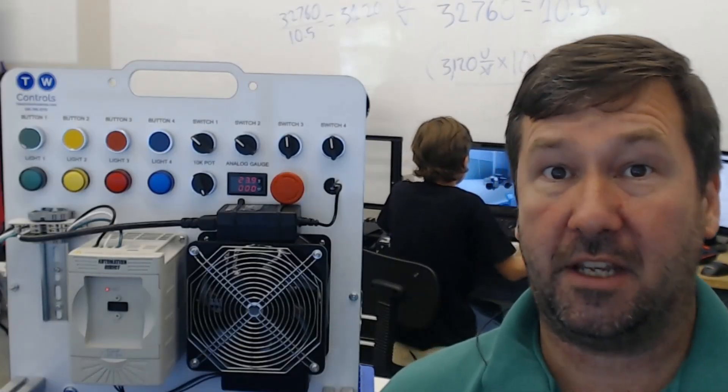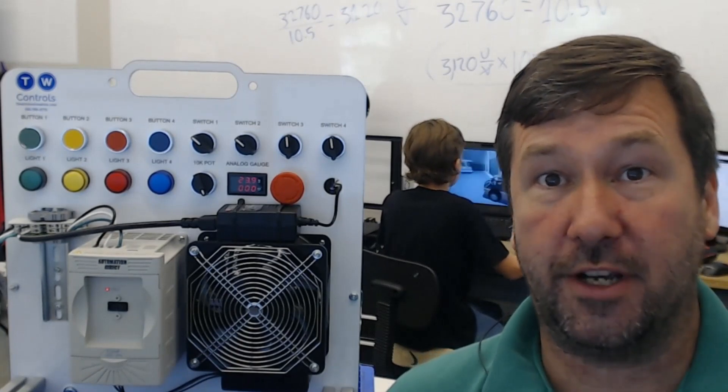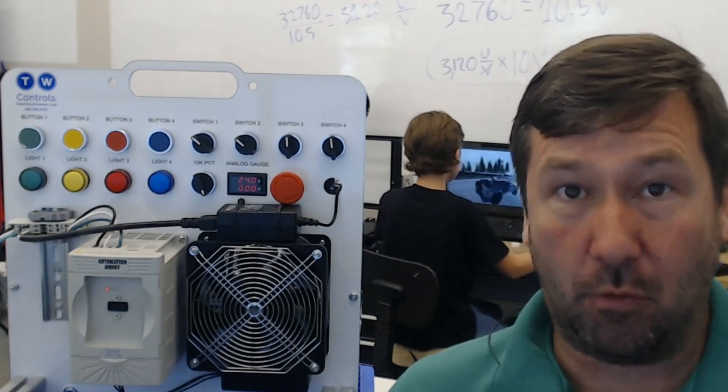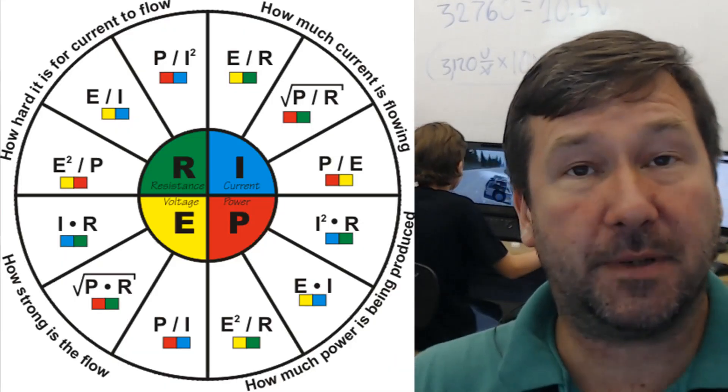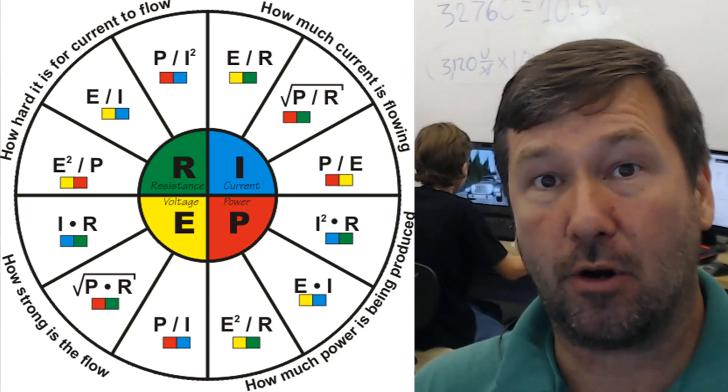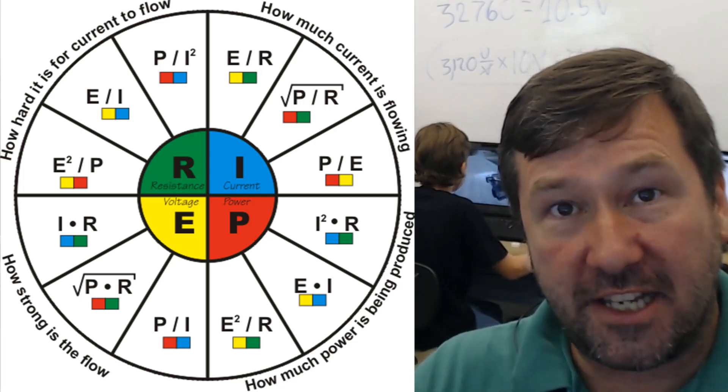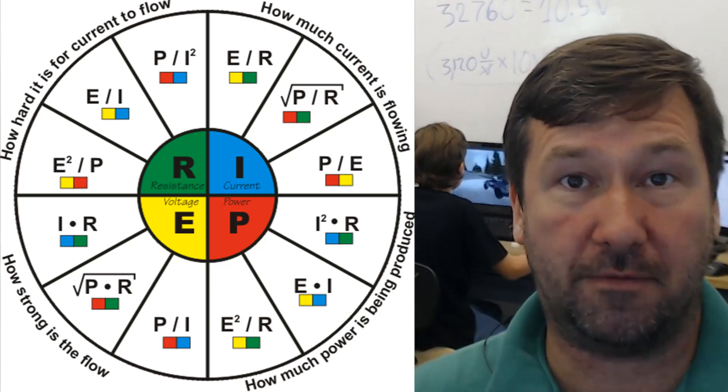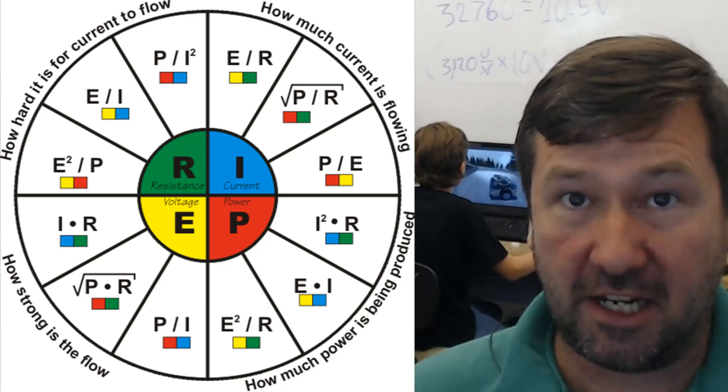Now a lot of you are thinking why are we talking about current when we're only concerned about voltage. We're reading analog voltage here. What does current have to do with it? That is because voltage, resistance, current, and power are all locked together through this ohms law pie chart. So if you know any two of them you can figure out the other two.